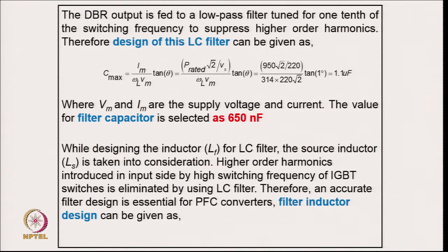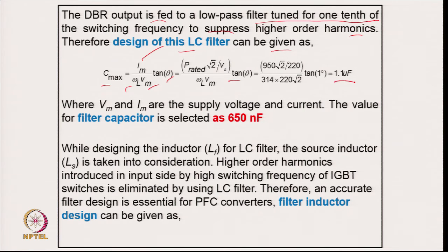Coming to the EMI filter design for Example 6: the diode rectifier output is fed to a low-pass filter tuned at one-tenth of the switching frequency to suppress higher-order harmonics. The filter capacitor is calculated from C_max = I_m / (V_m × ω_l × tan θ) with θ = 1 degree, giving 1.1 μF. A lower value of 650 nF is selected to keep the displacement angle further reduced.